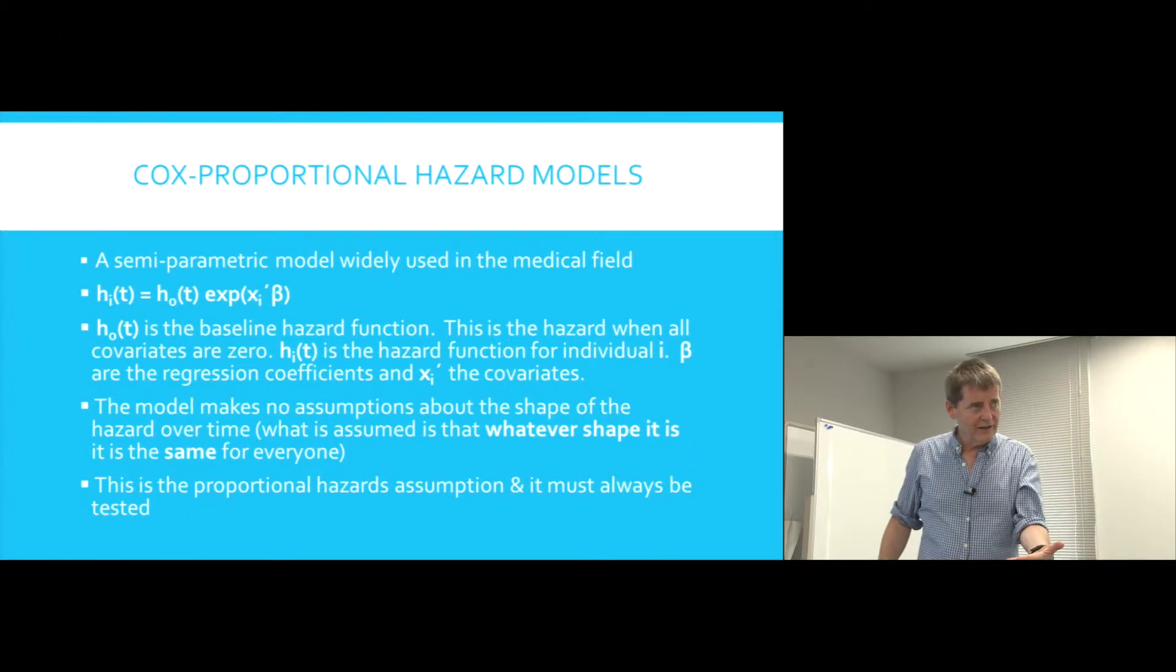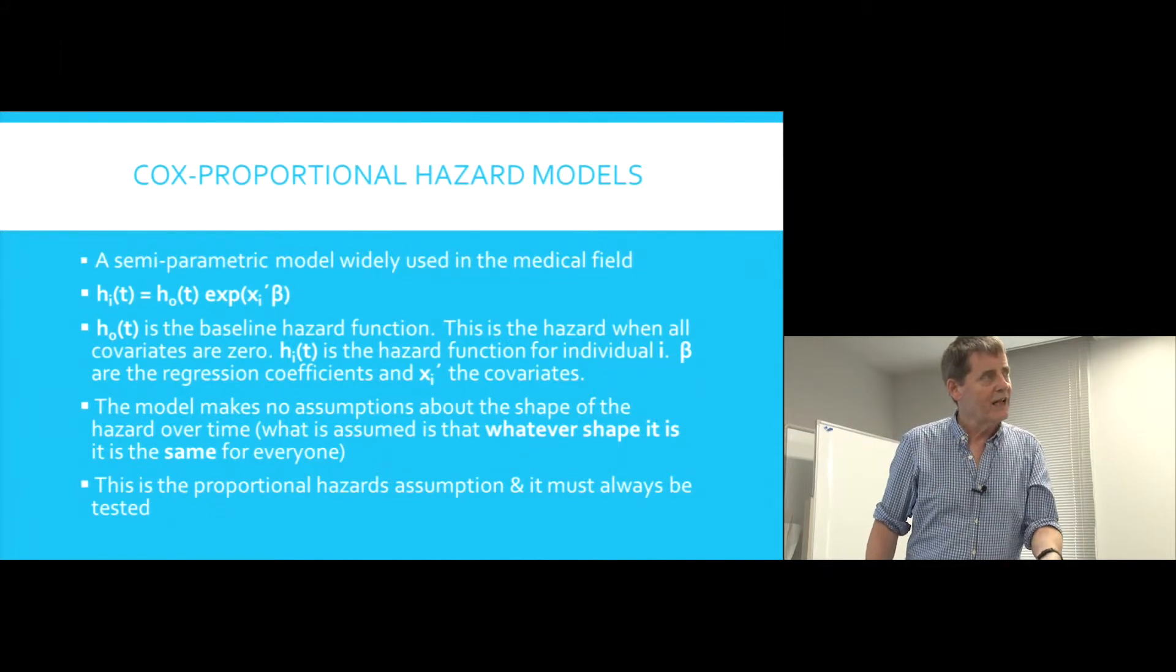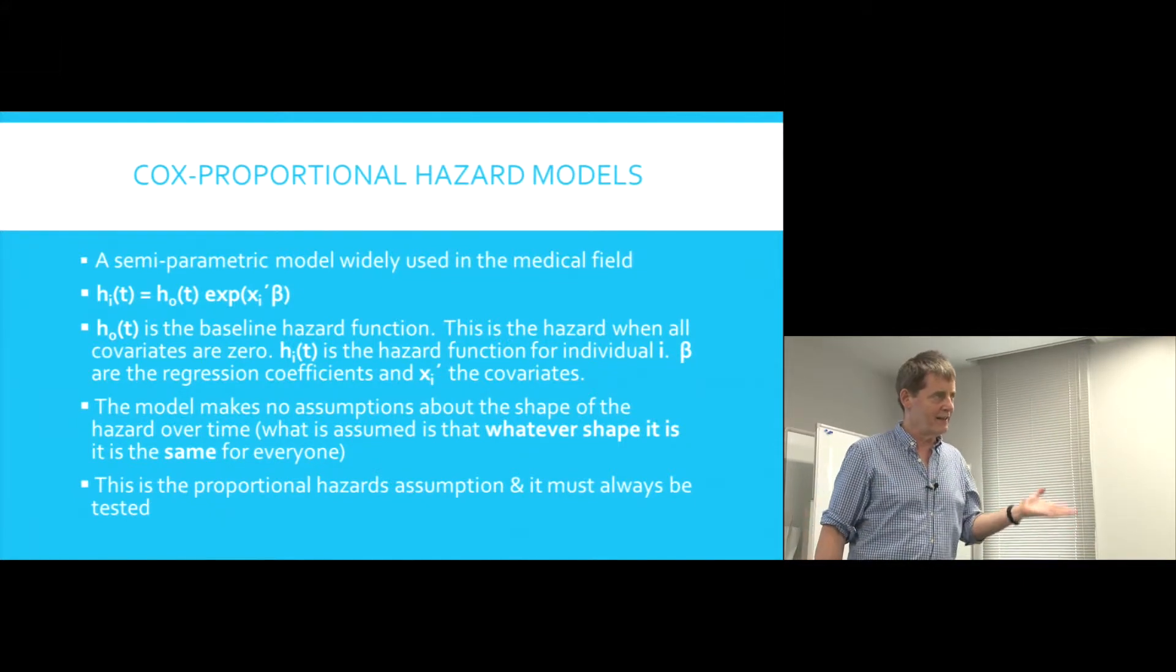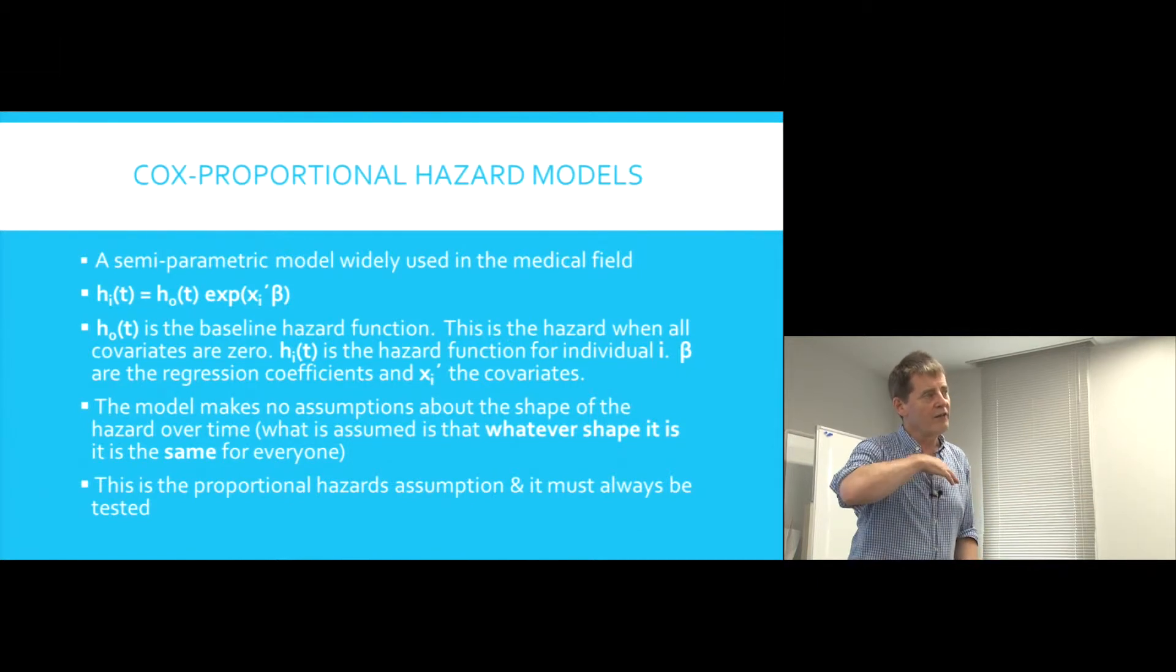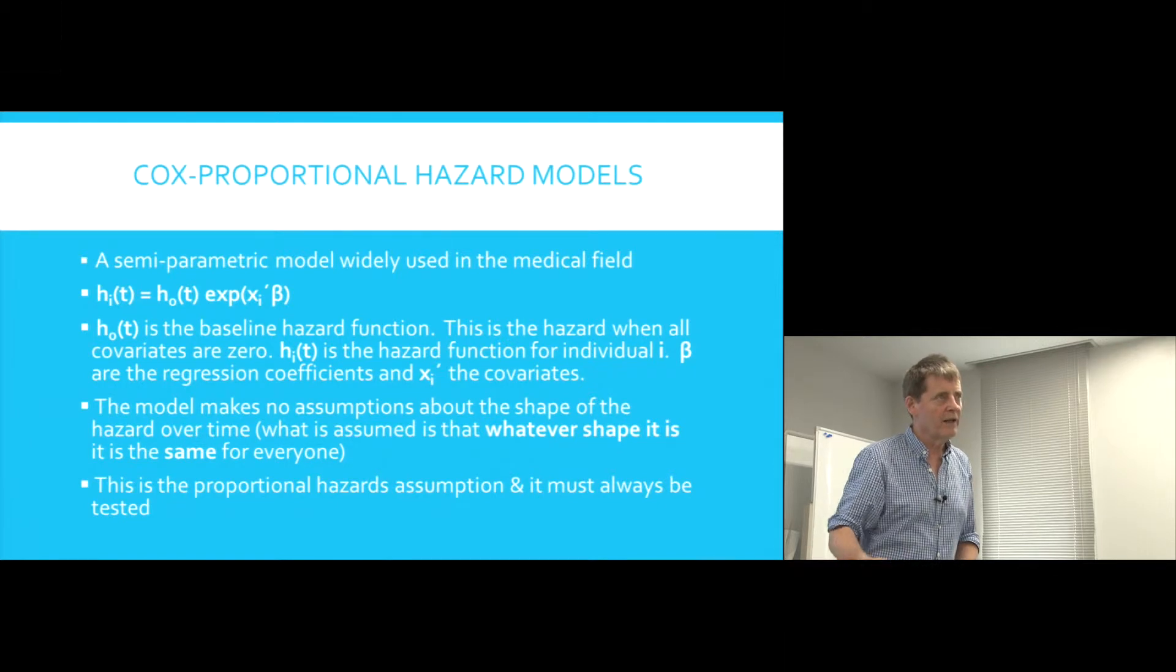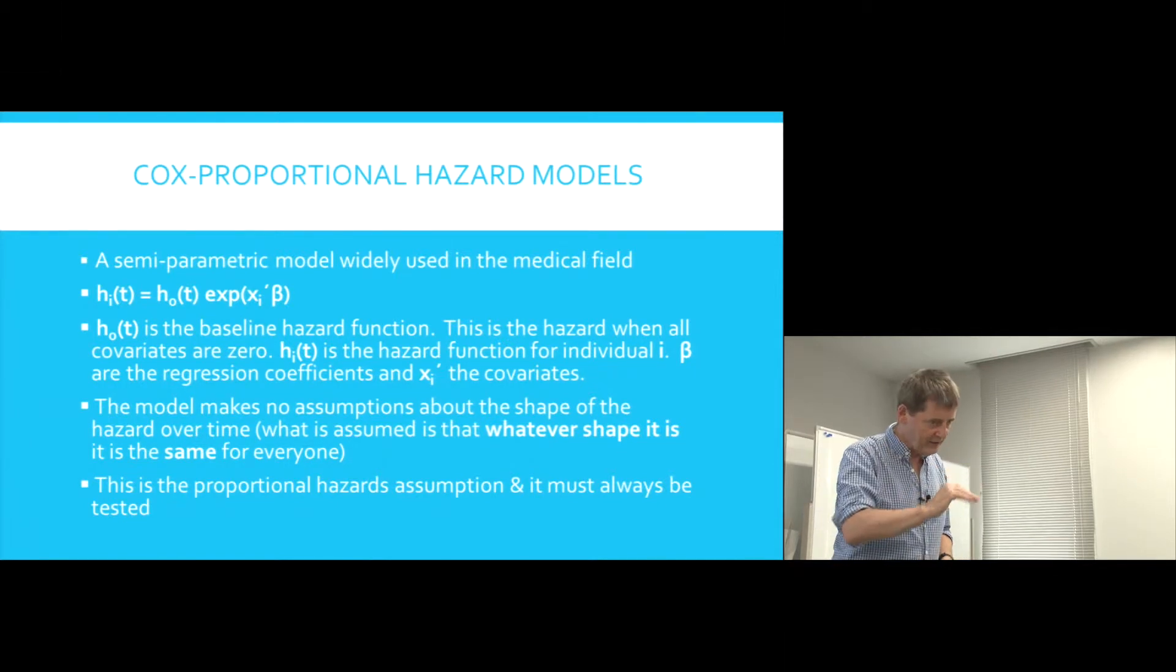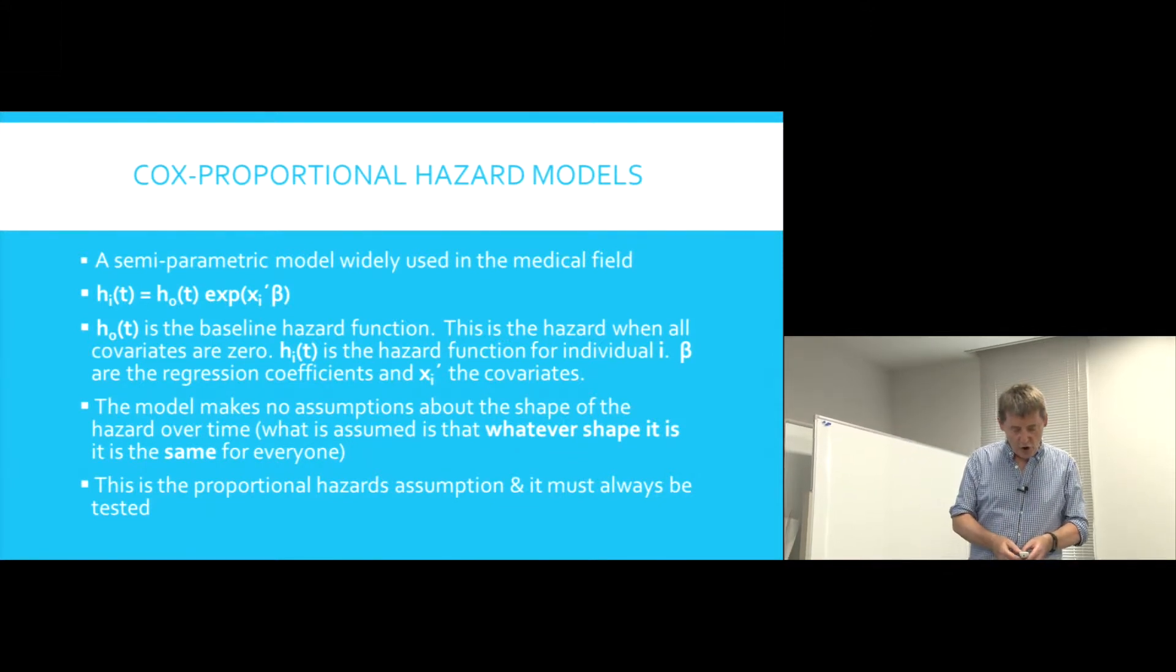H0 is the baseline hazard function. Now, that's the hazard that is experienced if all the covariates in the model are zero. In other words, if we ignore the age of the patient, if we ignore their gender, other variables such as these, what hazard is common, as it were, to all the participants.